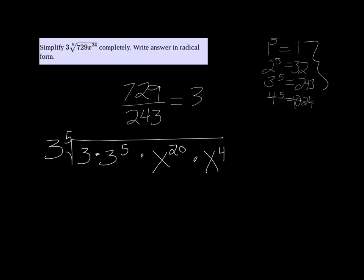Next step we can take out the perfect 5th roots. I can pull a 3 out because 3 to the 5th root of 3 to the 5th would just be 3. So I have 3 times the 3 that's already there.